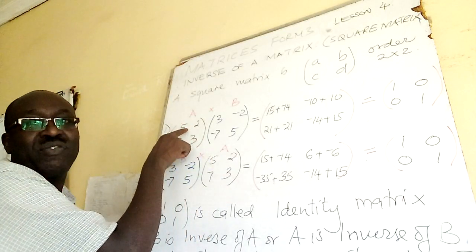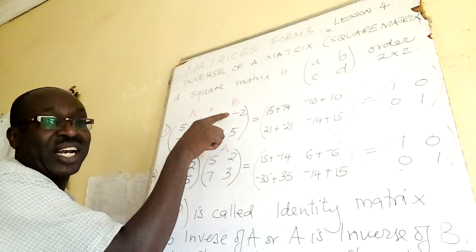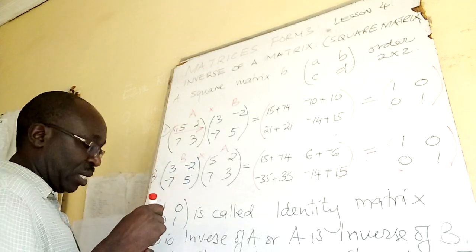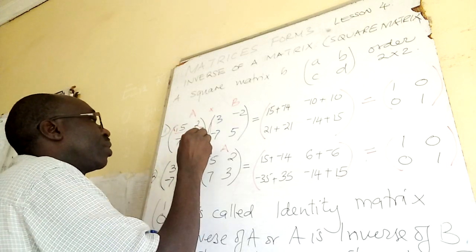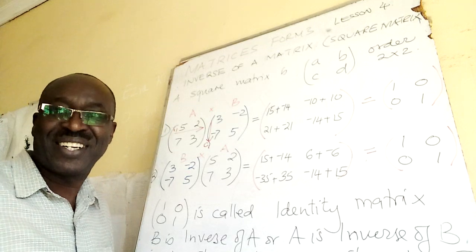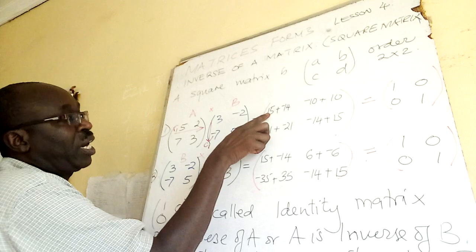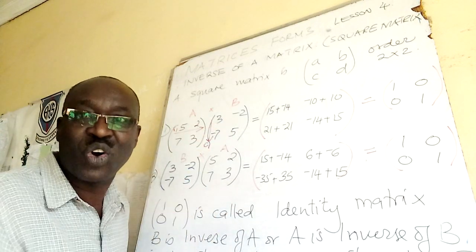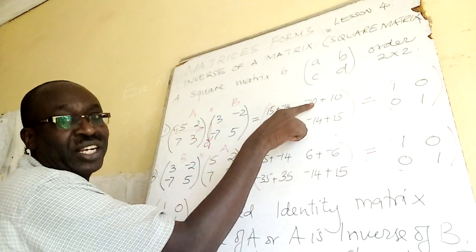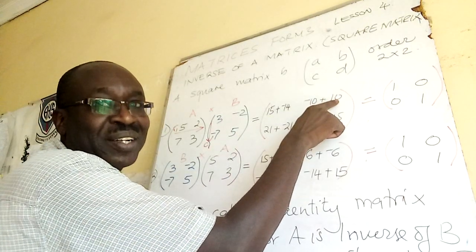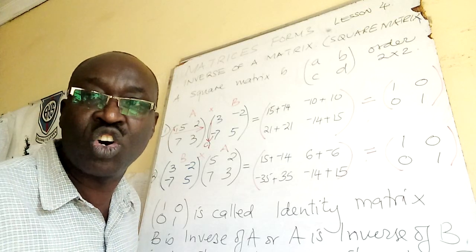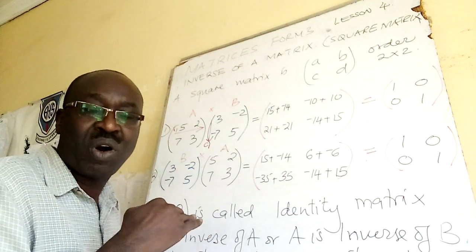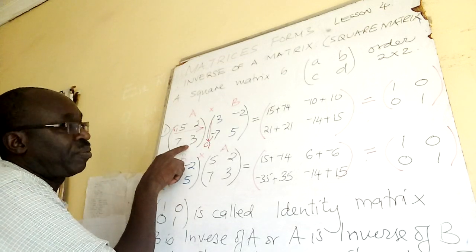Let me remind you how we multiply matrices from the previous lesson. I have matrix A and matrix B. You take row number one and then column one. Tail-tail gives 15 here, head-head gives negative 14 here. Then we go to column number two: tail-tail gives negative 10 here, head-head gives positive 10 here. Those results go in the first row.